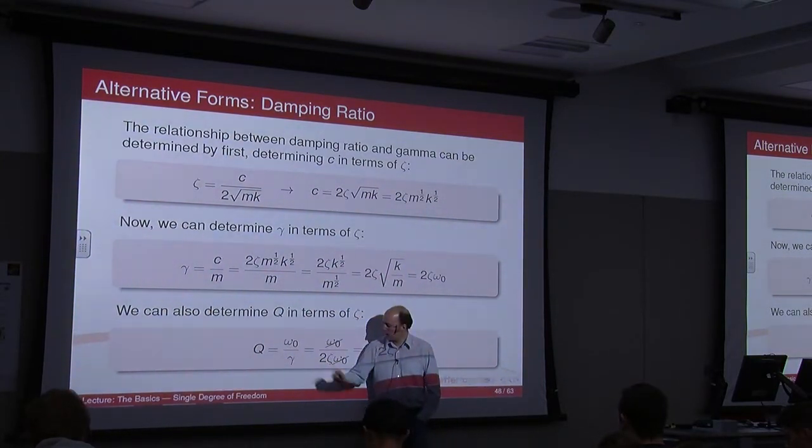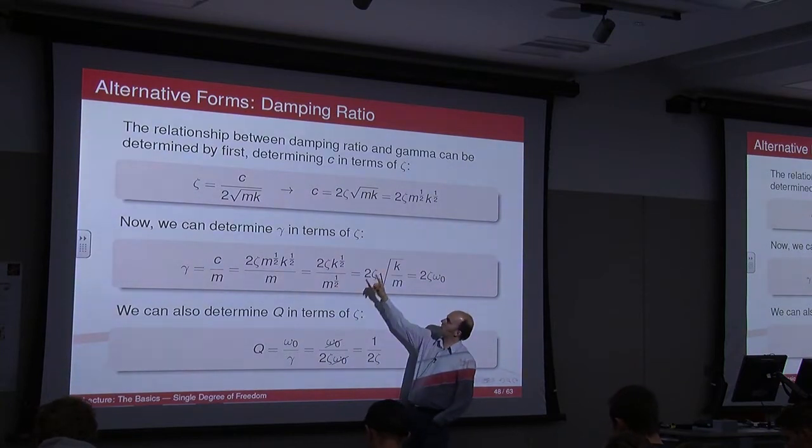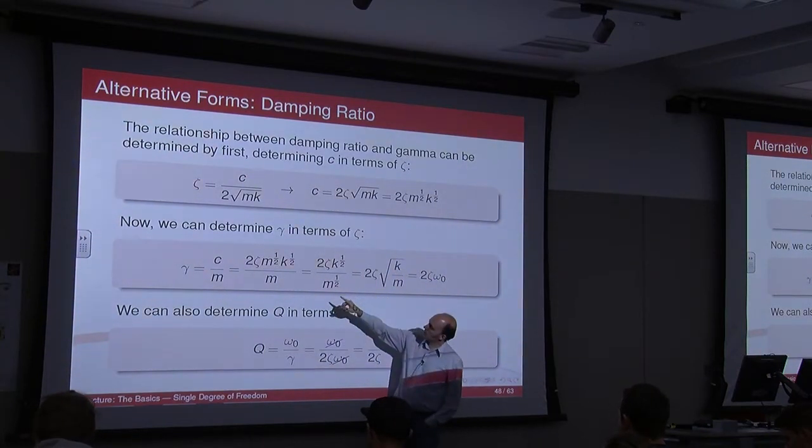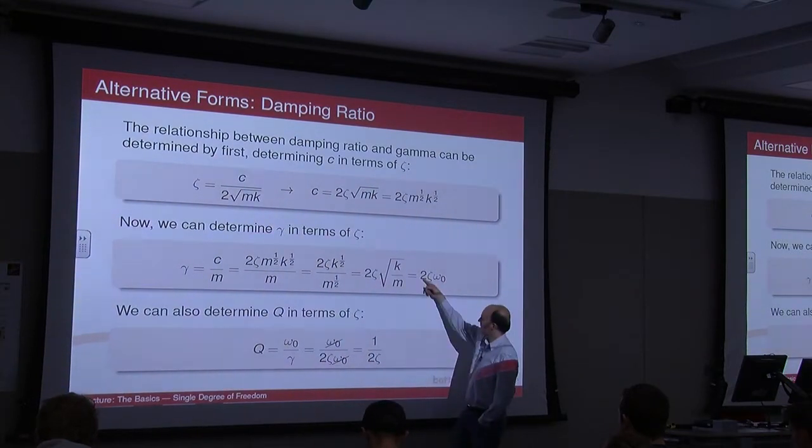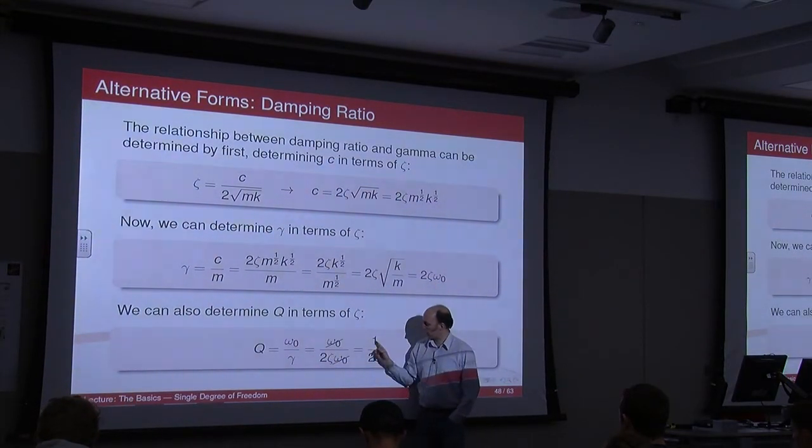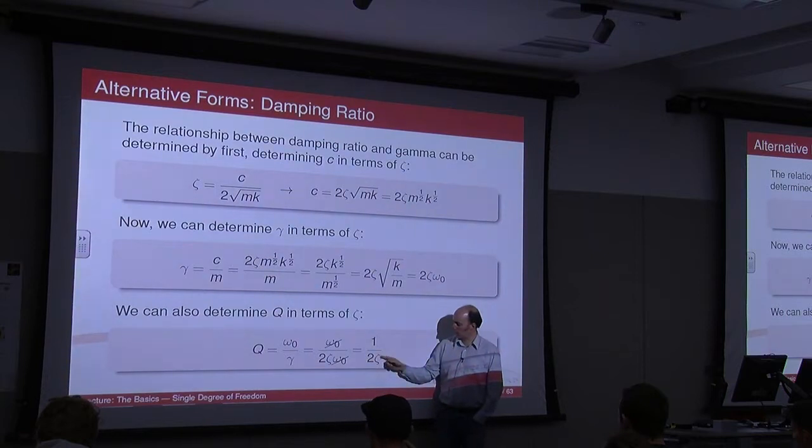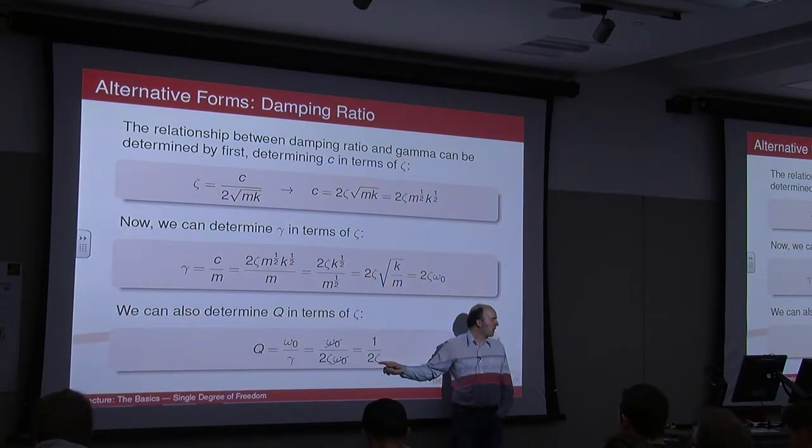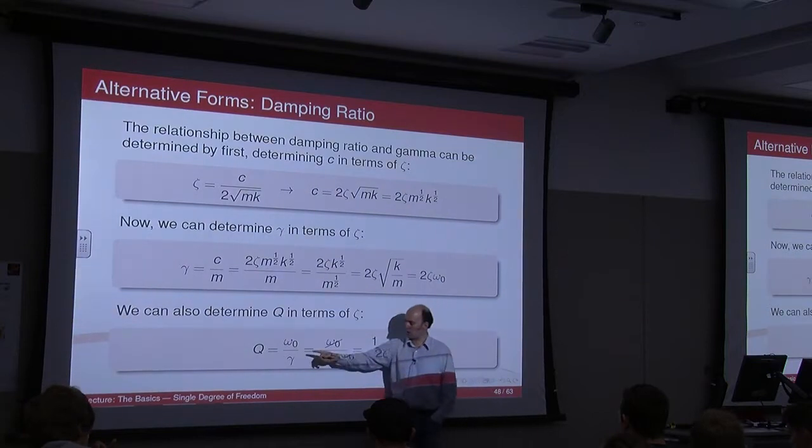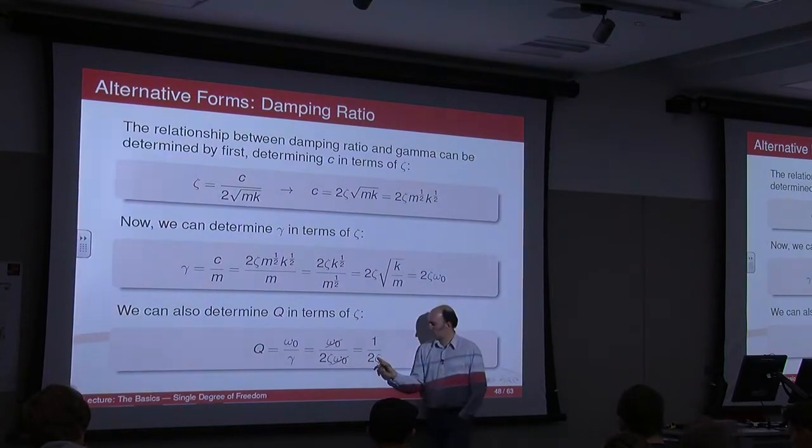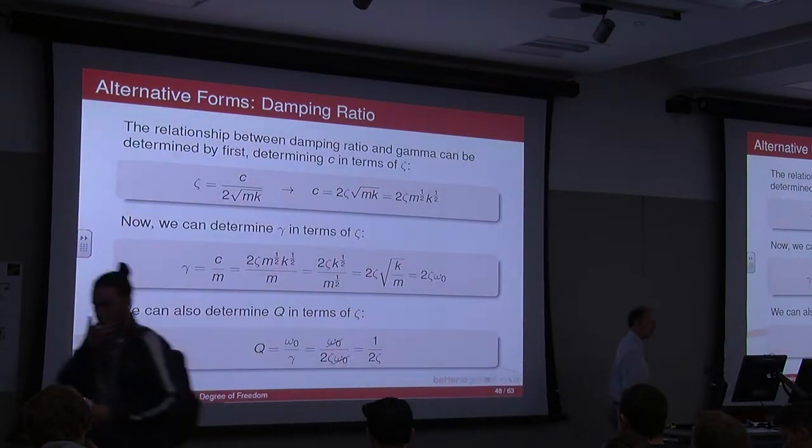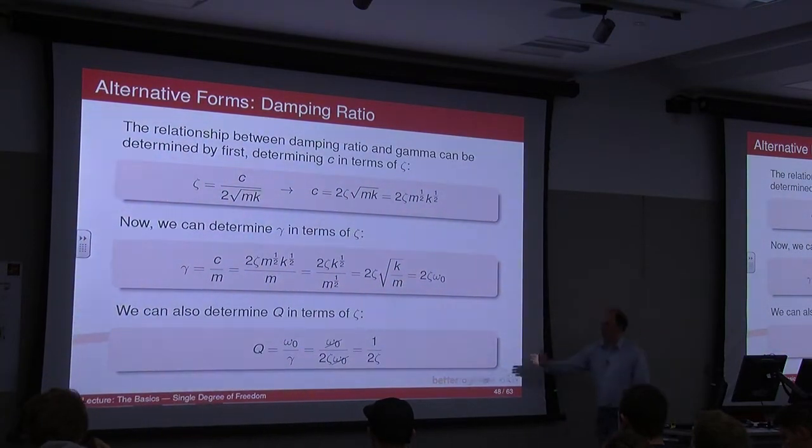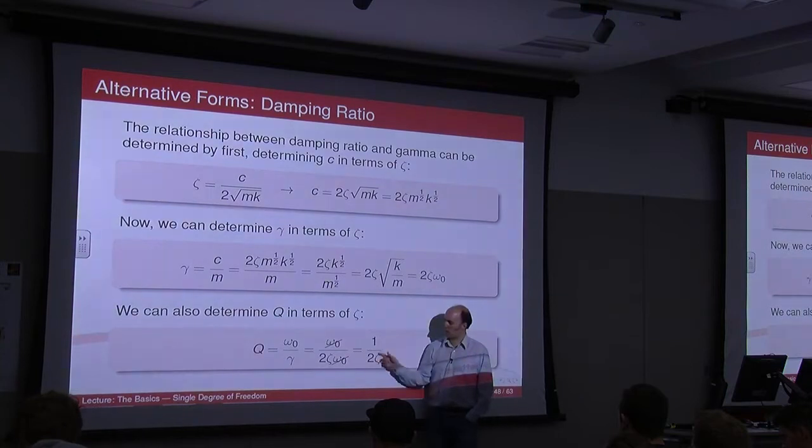Again, knowing gamma is c upon m, and you can plug in the same sort of stuff. Well, in fact, you can just plug in this into here. The omega naughts cancel and suddenly end up with 1 upon 2 zeta. So again, if zeta is high, if you've got a high damping, then Q is correspondingly low. And obviously if zeta is low, then you've got a correspondingly high Q. So if you want to relate Q and damping ratio, then this is the equation to use.